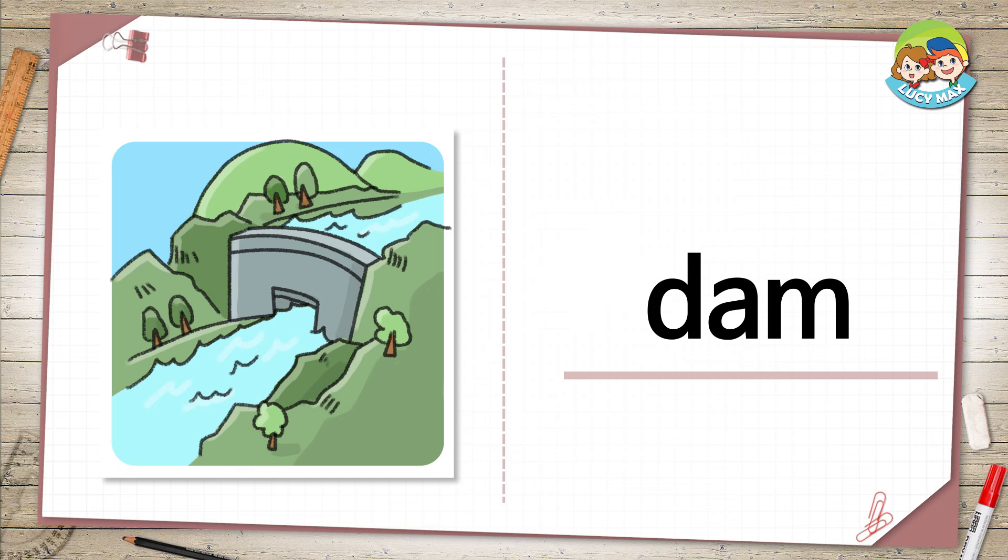Dam. This is a dam. It is built across the river. A dam stops the water from flowing and lets a little water out at a time. While doing that, the water makes power. And we use the power to make electricity.